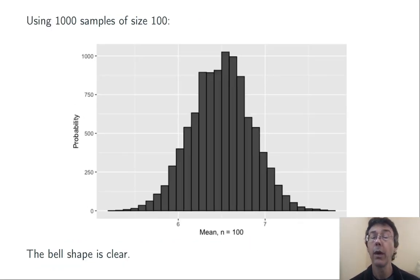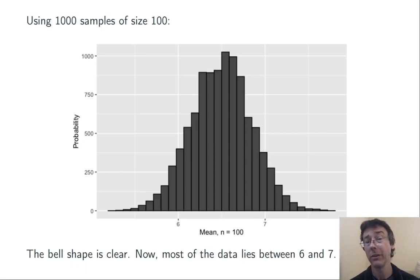Let's do 1,000 samples, all of size 100. Get 100 random numbers between 1 and 12. Take the mean. Do it again, again, again, 1,000 times. Plot the results. Now the shape is clearly bell-shaped. And most of the results lie between 6 and 7. The standard deviation of the sample mean is clearly shrinking.